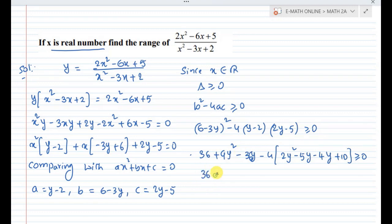36 plus 9y square minus 36y minus 8y square plus 20y minus 4y plus 10 minus 40 which is greater than or equal to 0. 9y square minus 8y square is y square. While observing minus 36y plus 20y minus 16y. The constant is 36 plus 10 minus 40. So we get y square minus... Actually it simplifies further.